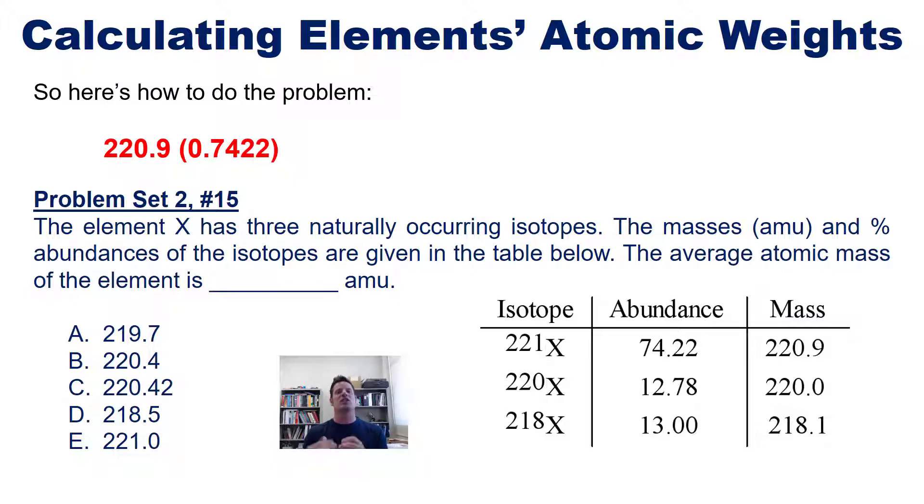Now we aren't done. In order to calculate the overall atomic weight, which is a weighted average of all these different percentages and masses, we have to continue down the line. So we take the next isotope mass, which is 220.0, add it to what we have so far and multiply that 220.0 by 12.78 divided by 100. Then we do the same thing with our final mass - 218.1 multiplied by 13.00 divided by 100. If we add all of that together in our calculator, it gives us this number. That is the averaged mass that takes into account each of these individual isotopic masses and their individual percentages of abundance in nature.